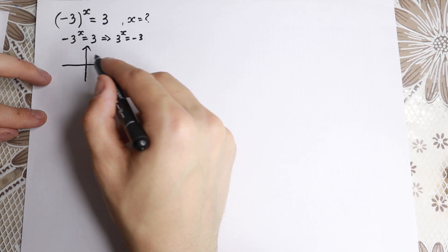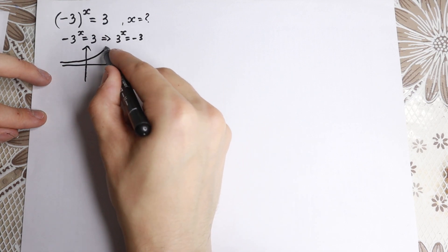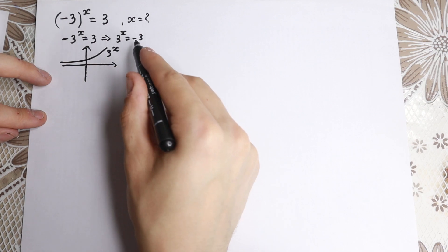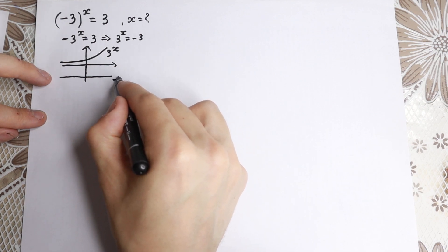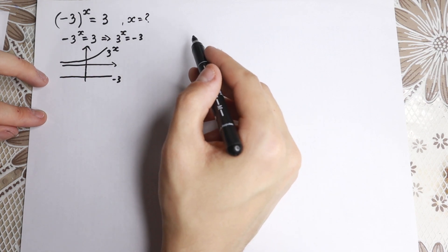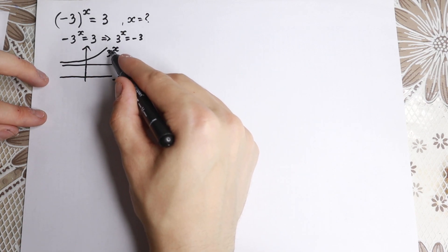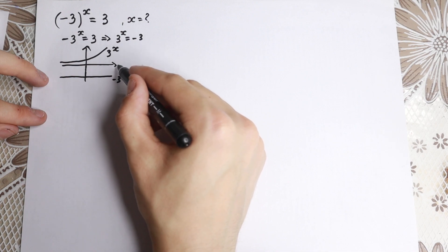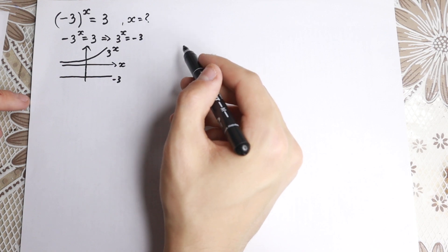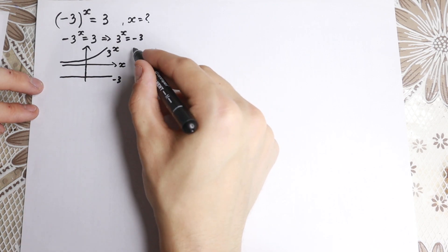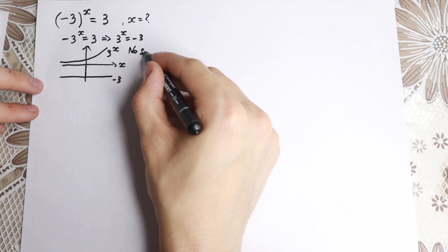So 3 to the x is our increasing exponential function, and minus 3 is our constant. As you can see, there is no point of intersection. This function 3 to the x doesn't even intersect the x-axis, so intersecting with minus 3 is not possible. So right here we don't have any roots — there is no solution.